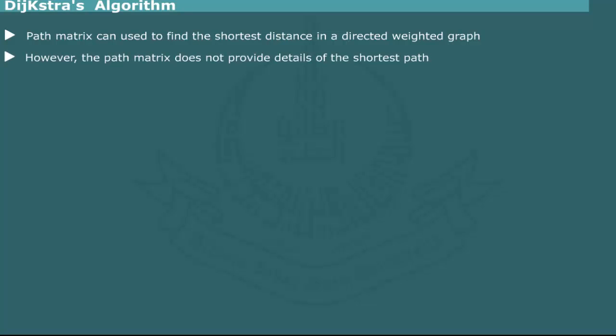Dijkstra's Algorithm. We have already studied that a path matrix can be used to find the shortest distance between any pair of vertices in a directed weighted graph. The algorithm, however, does not provide the details of the shortest path between a given set of vertices.